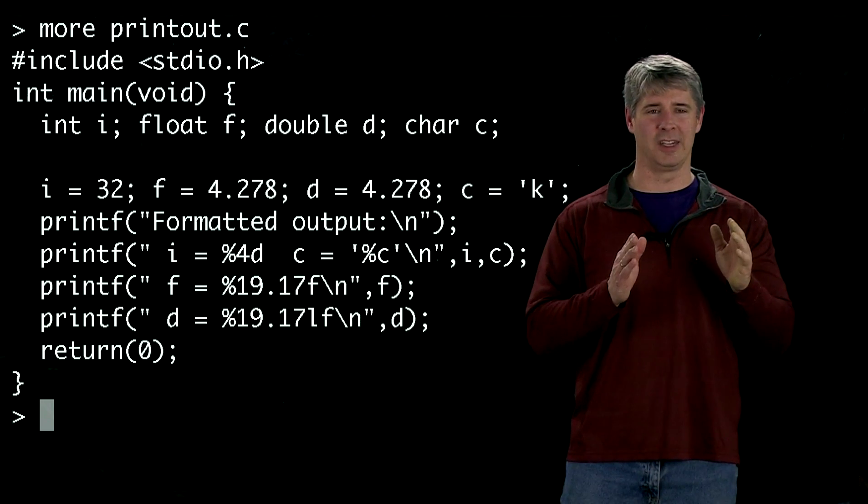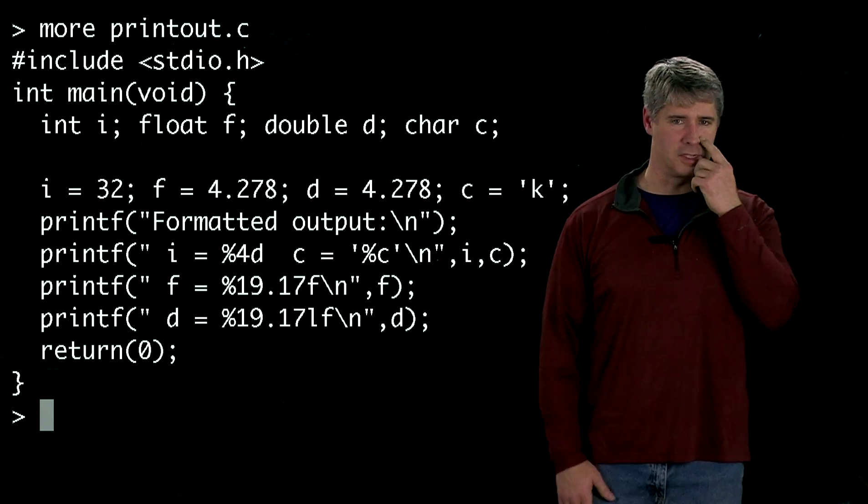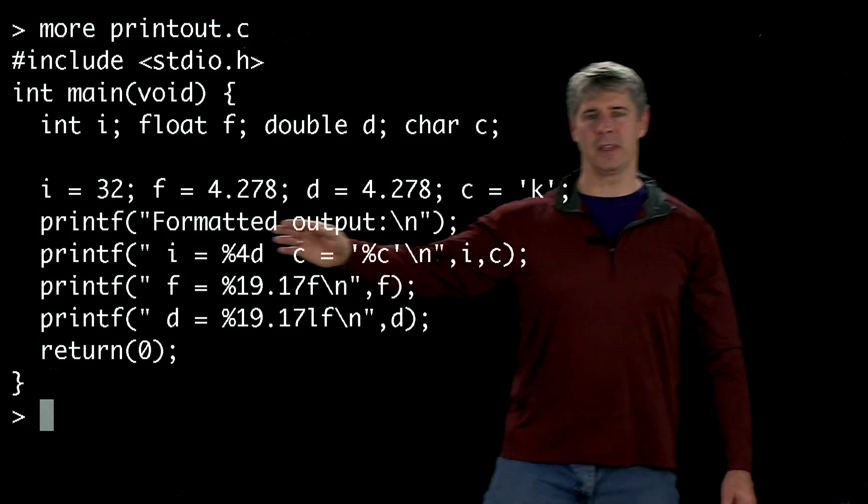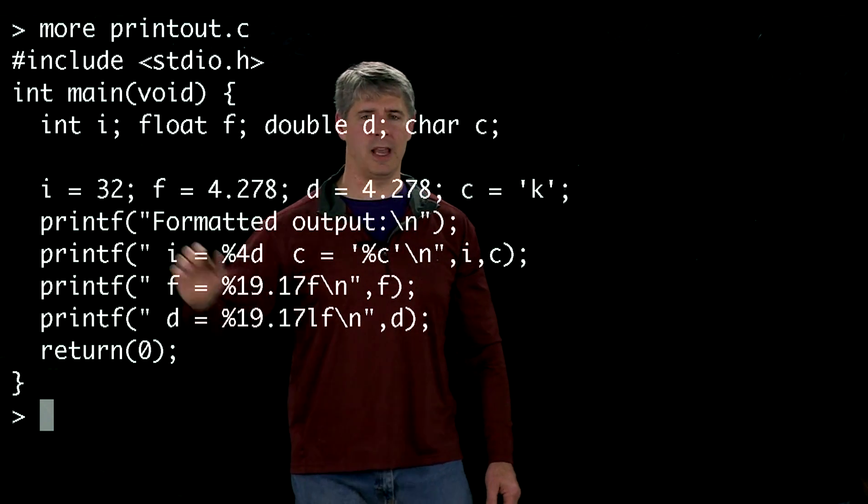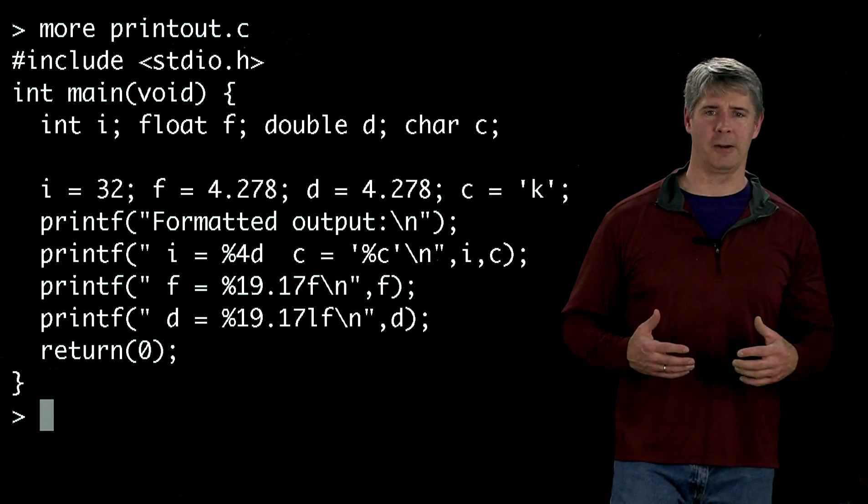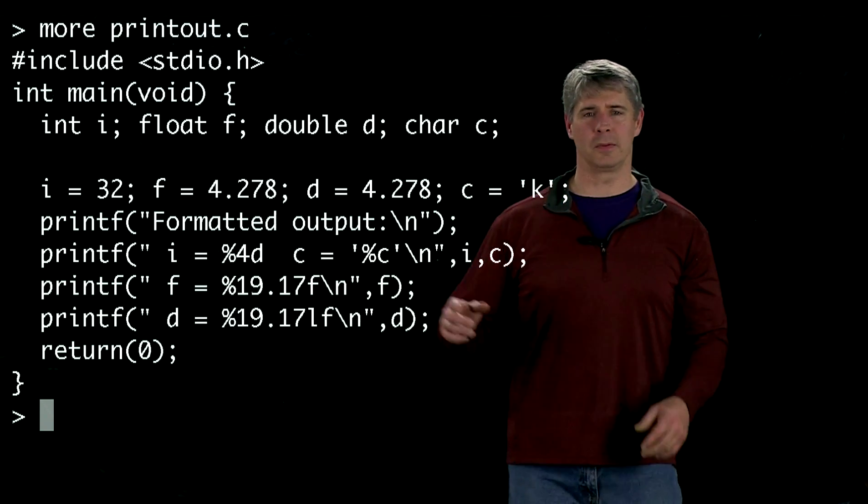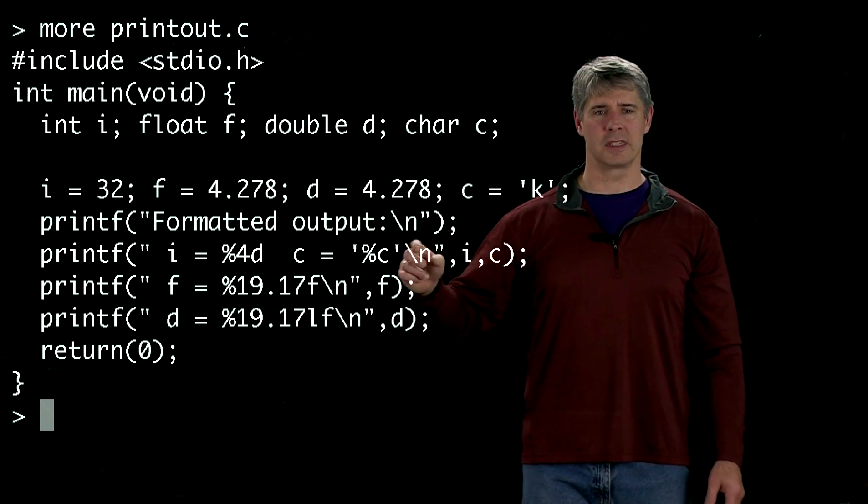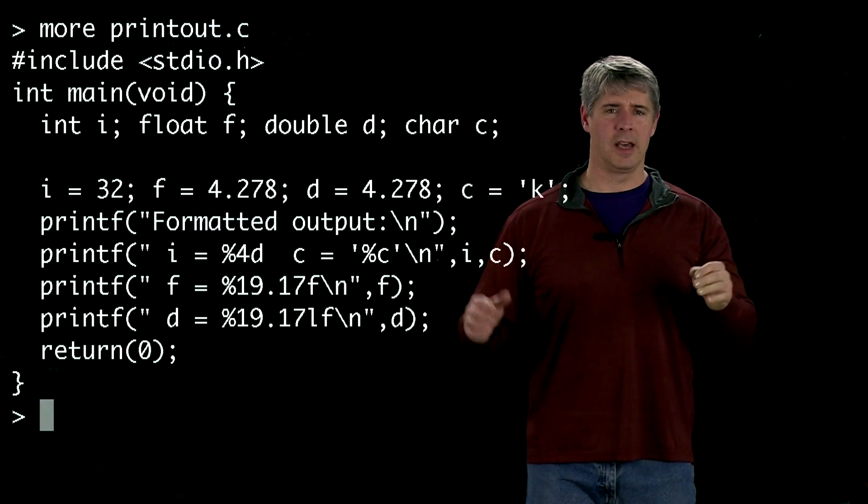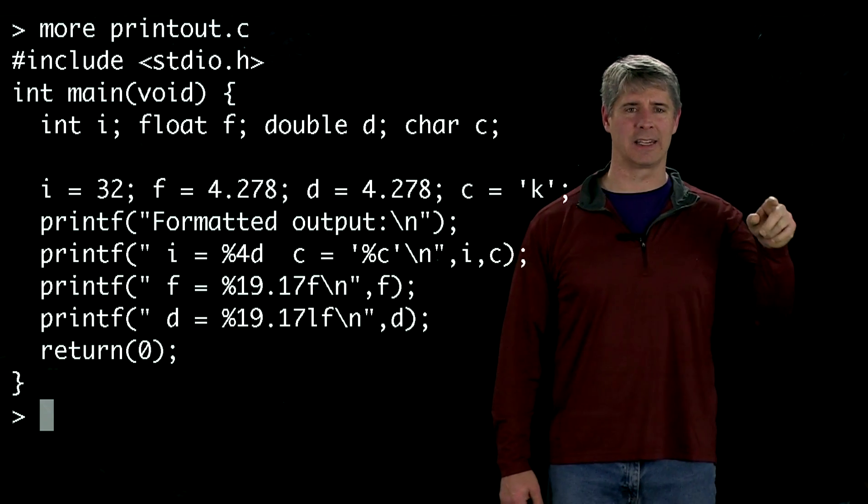So we've assigned values to our four variables, and now we've got this printf command here. Printf is the way that we print to the screen or the standard output. And we print everything that comes inside the double quotes. So here we're going to print out formatted output.